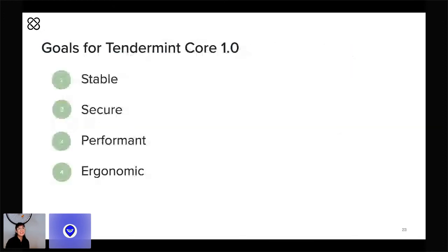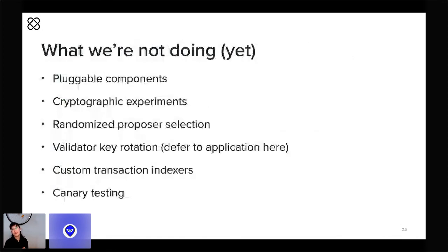So that is a lot of stuff, but I hope you can see that we're staying really focused on those four themes I mentioned earlier. This kind of focus does also mean that there are some things we've deprioritized on the immediate roadmap, and although we may want to do some of these things eventually, they didn't quite make the cut for Tendermint 1.0.